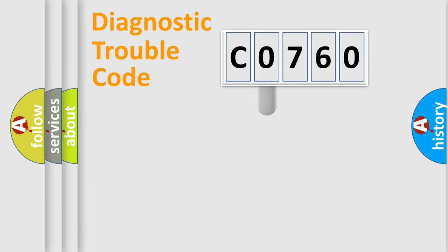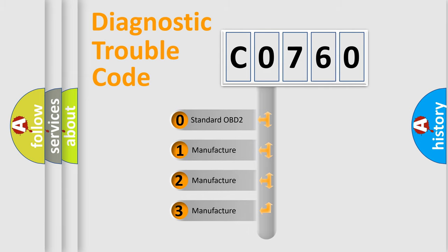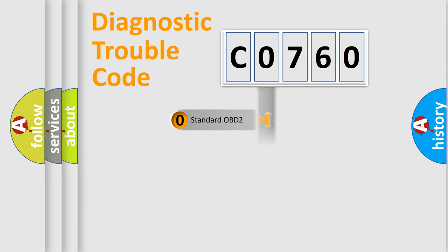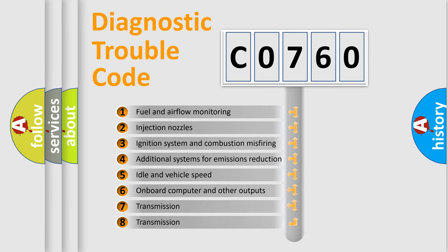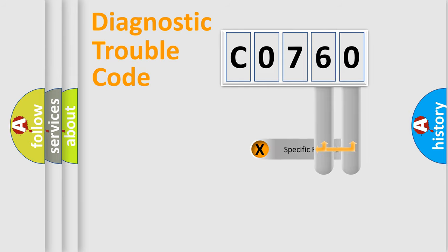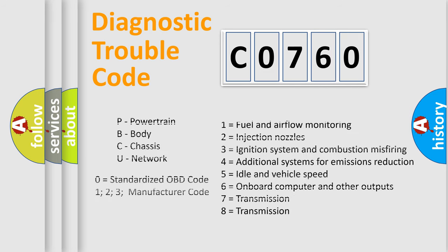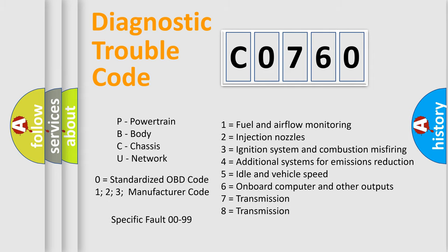This distribution is defined in the first character of the code. If the second character is expressed as zero, it is a standardized error. In the case of numbers 1, 2, or 3, it is a manufacturer-specific error expression. The third character specifies a subset of errors. This distribution is valid only for the standardized DTC code, and only the last two characters define the specific fault of the group. This division is valid only if the second character is expressed by the number zero.